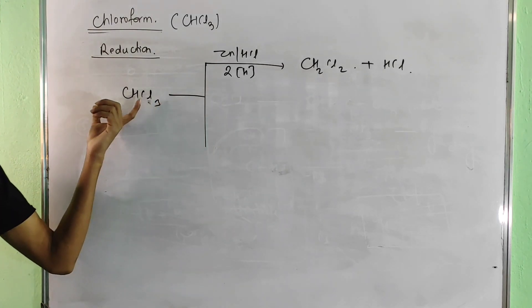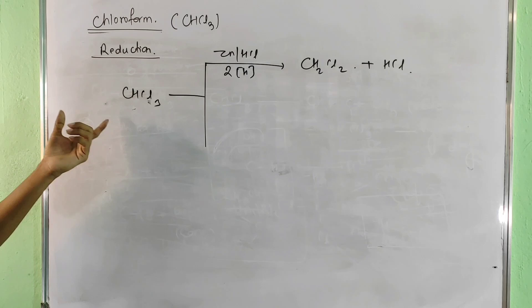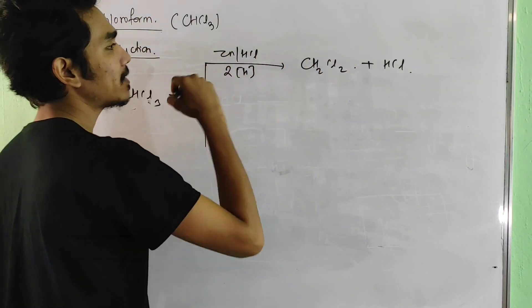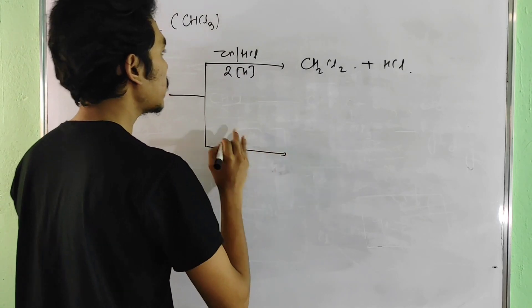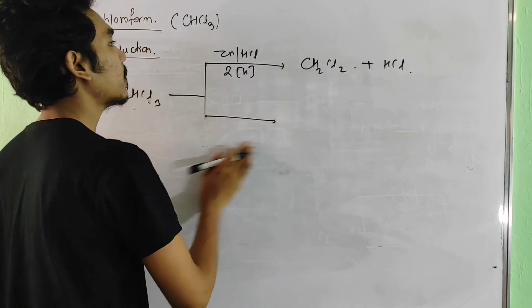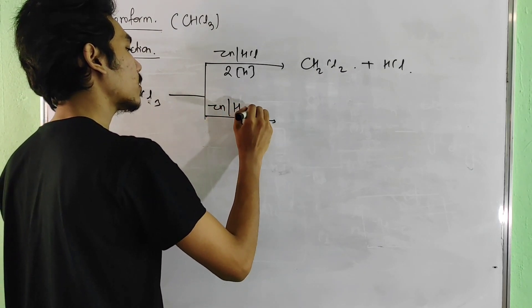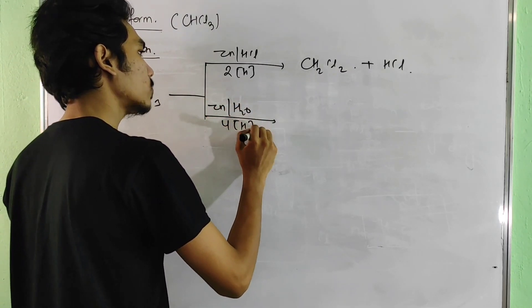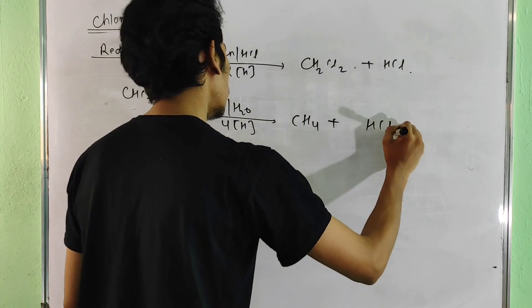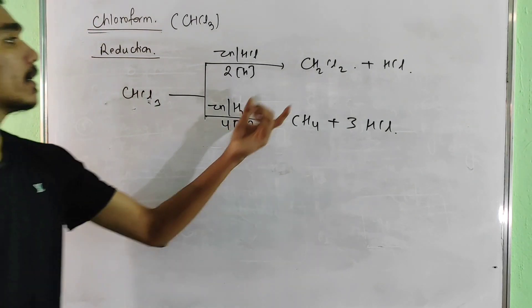The reduction of chloroform CHCl3 using zinc and water gives CH2Cl2, which is called dichloromethane. When zinc reacts with HCl also produced, further reduction can yield CH4, methane, along with HCl as a byproduct.